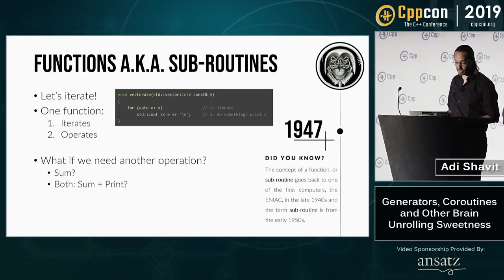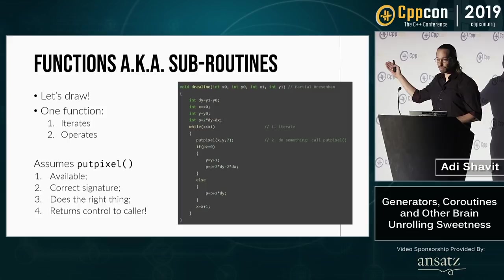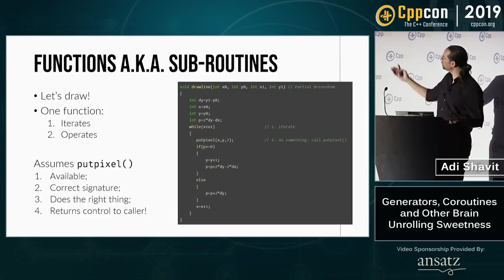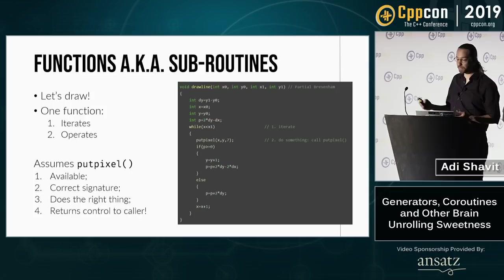Let's see another example. Say we want to draw a line. We can go to various algorithm books or online resources. This is only a partial line implementation, and usually what you see would be code that looks similar to the draw line function here. Again, it actually does two things: it iterates over a sequence — in this case, the rasterized pixels along the line — and it draws the pixel to the screen using a function called put_pixel.